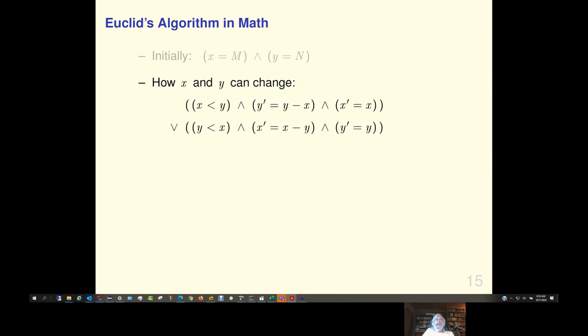And so, here's Euclid's algorithm in math. Now, what this second part is, is the first part describes the initial values of x and y. And the second part describes how x and y are allowed to change. Now, what about this part? Stop when x equals y. Well, we don't need to say that. Why? Well, how can x and y change when x equals y? Well, when x equals y, x less than y is false. And false and anything is false. So, that first part of the formula is false. And similarly, y less than x is false. So, the second part of the formula is false. And false or false equals false. So, this formula equals false when x equals y. Which means no change is possible. So, the algorithm must stop. So, this is Euclid's algorithm in math. Just two simple math formulas.